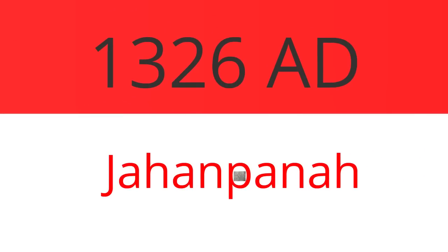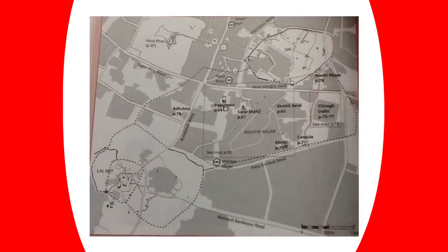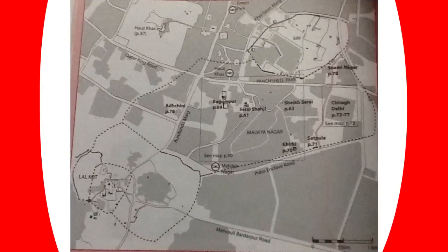Jahanpanah is considered by some to be the fourth capital city of Delhi, founded by Ghiyasuddin Tughlaq in 1326–1327 and created by linking Lal Kot and Siri Fort by two walls, thus enclosing a large area between them. Not much remains, even of the walls and gates.